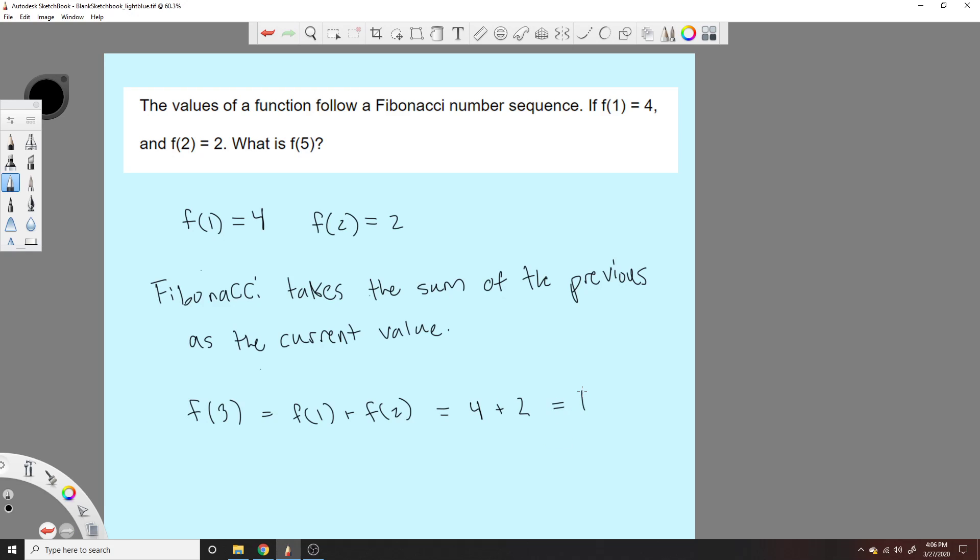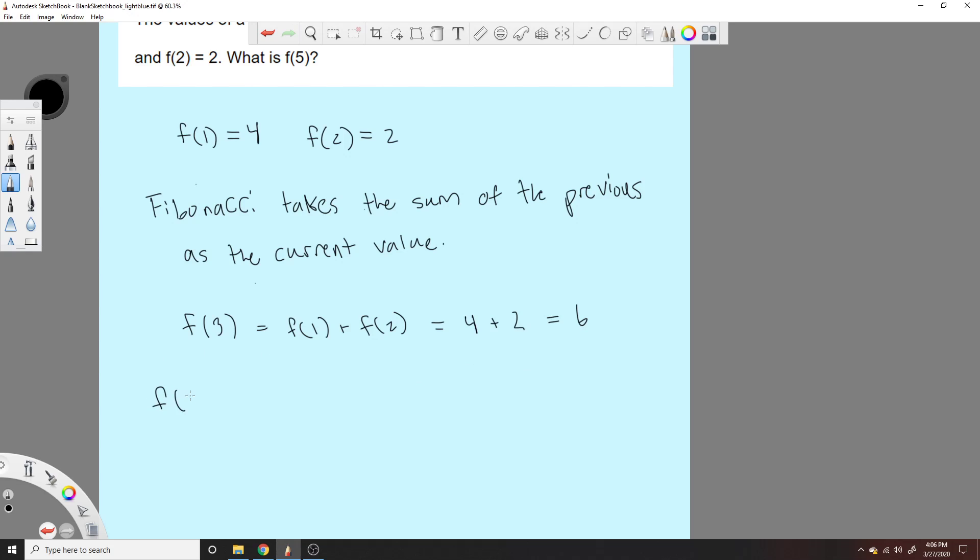Okay, so f4 is equal to f2 plus f3. Well, f2 we know is the 2 that was given. f3 we just found, that's the 6 here.